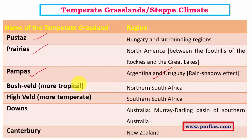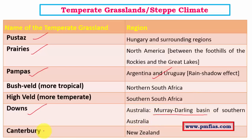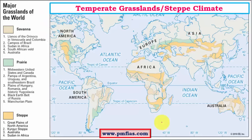Bushveld and Highveld are part of South Africa, mainly due to the rain shadow effect of the Drakensberg Mountains. Downs occur in the Australian region, particularly in the Murray-Darling Basin in South Eastern Australia, mainly due to continentality. Canterbury grasslands in New Zealand are also a steppe type of climatic region.